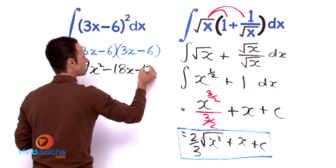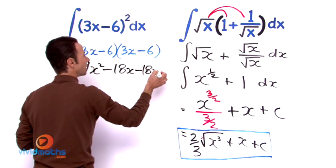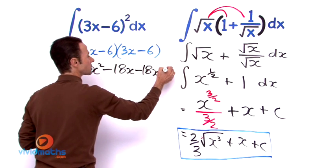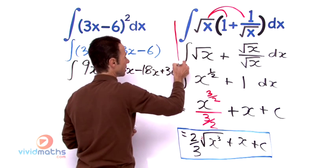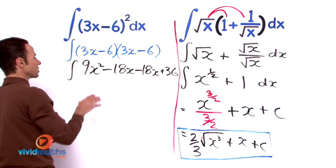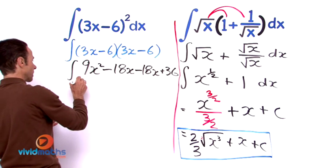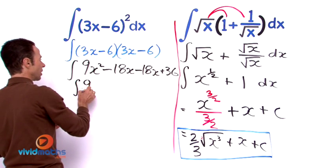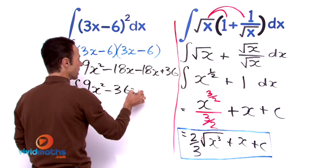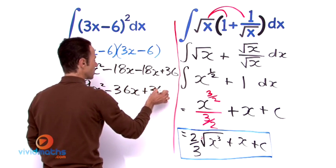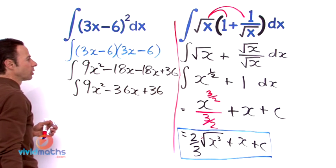36x plus 36. Let's further simplify that so that is integral of 9x squared minus 36x plus 36 dx. So that is what we are going to do. Now all you have to do now that you have expanded it is individually take each component and integrate it.